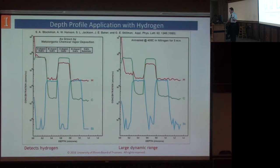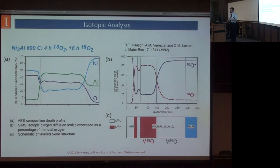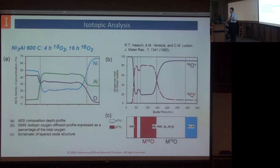This is an example doing some isotopic analysis. We combined Auger depth profile results with the SIMS depth profile, where Auger follows the various elements and SIMS specifically looks at the two isotopes of oxygen. By knowing which isotope diffuses, you can tell whether it's the metal or the oxygen that's diffusing. In this case we had a Ni3Al sample being oxidized, and we found that the nickel and oxygen both diffuse, but the aluminum does not.